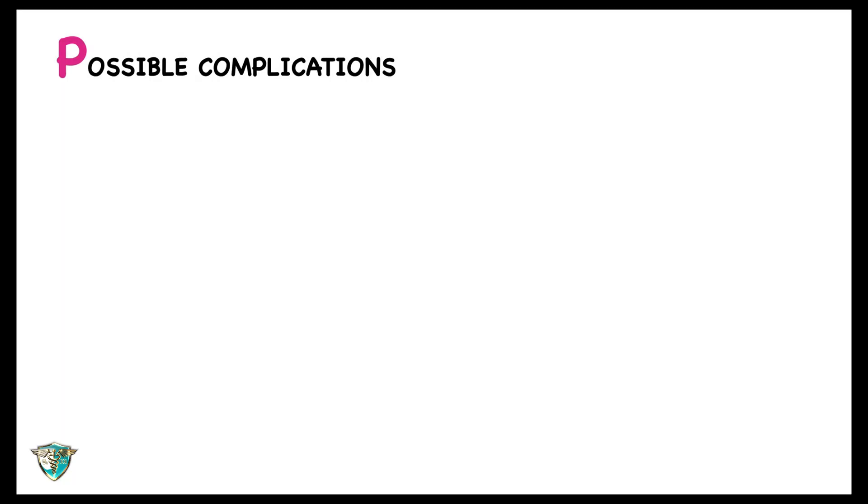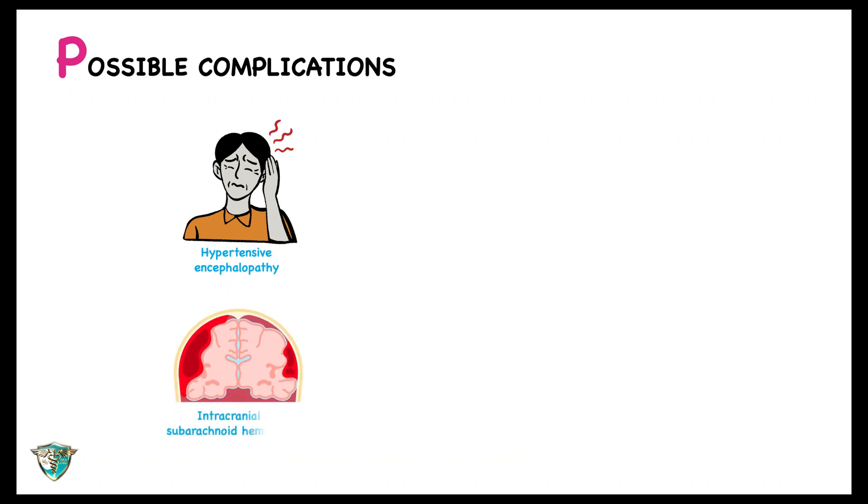Hypertensive crisis can be very dangerous as it may lead to several complications, including hypertensive encephalopathy, intracranial or subarachnoid hemorrhage, acute left ventricular failure with pulmonary edema, myocardial infarction, dissecting aortic aneurysm, and renal failure.